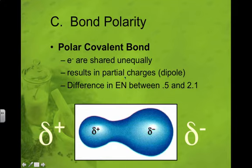You might want to write that down somewhere, that a dipole is where you have partial charges between two atoms. So the difference in the electronegativity here would be between 0.5 and 2.1. So if you subtract the two electronegativity values and get between these numbers, you're going to say it's polar.